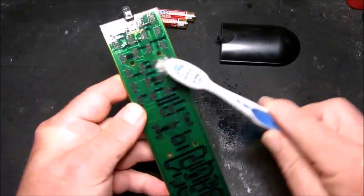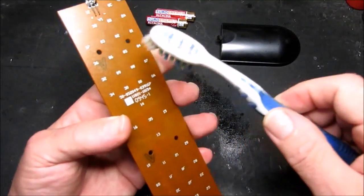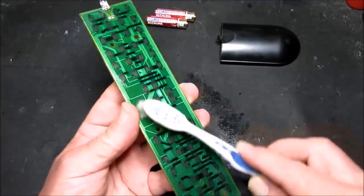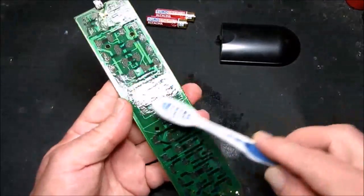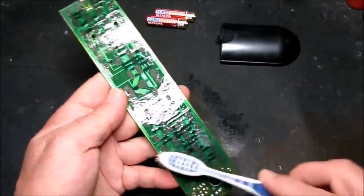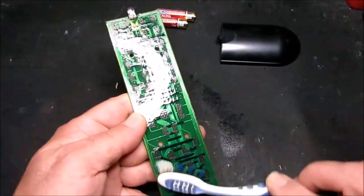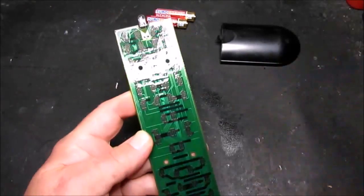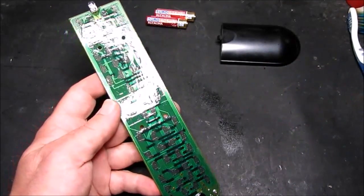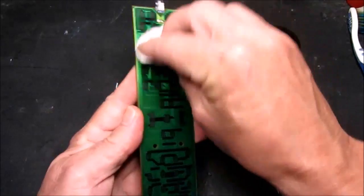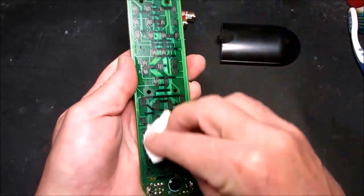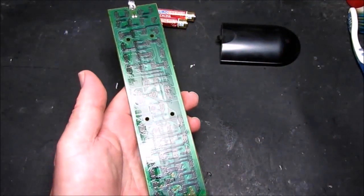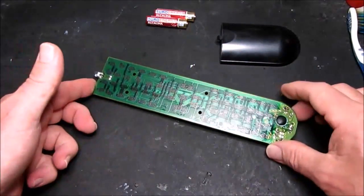Now the buttons up here, this is the number pad, so they're the more frequently used, and the cursor arrows and okay buttons. The ones down the bottom are for a DVD player or something, so they're probably not very much used. Let's give that a wipe down, let that evaporate.